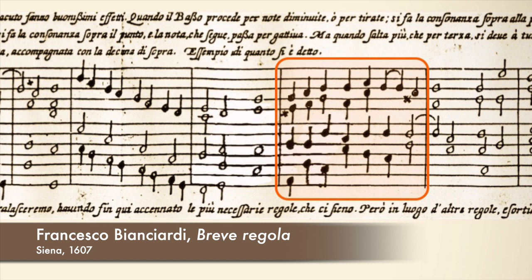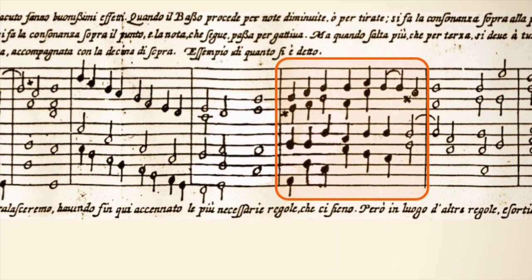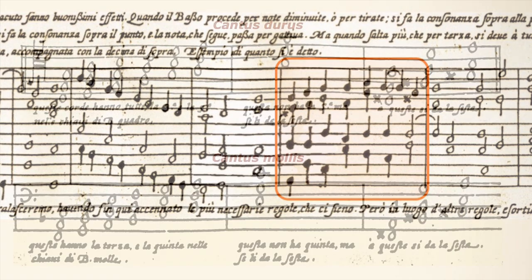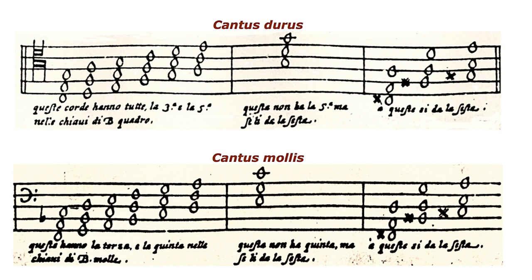Chords may be consonant or dissonant; for now I will only discuss consonant harmonies. Bianciardi shows us on which bass notes we should play 5-3 or 6-3 in both cantus durus and cantus mollus. We should play 5-3 on those bass notes not in need of a 6. A 6, for example, is needed to prevent a diminished fifth, but of course there are more reasons to use a 6 chord.